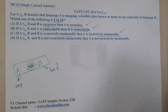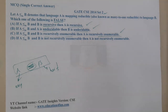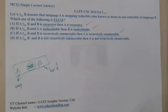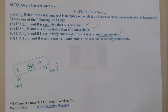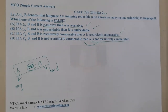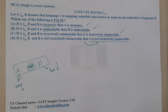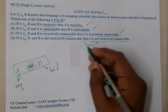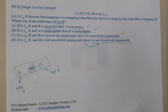When it comes to Option D, they use the word 'not' — so please concentrate. If A ≤m B and B is not recursively enumerable, can we conclude that A is also not recursively enumerable? We cannot guarantee that, because A is the easier problem — it could be a regular language, context-free, context-sensitive, or any other class. So anything is possible, and we cannot conclude this.